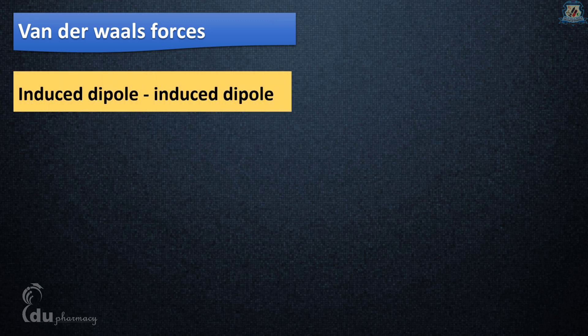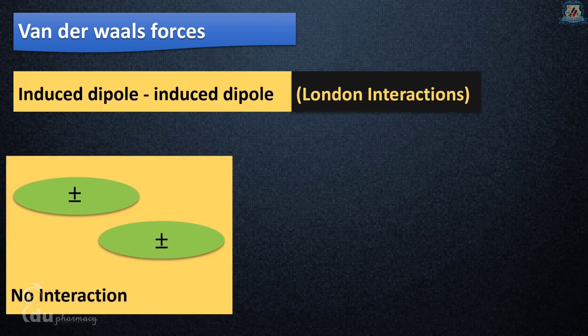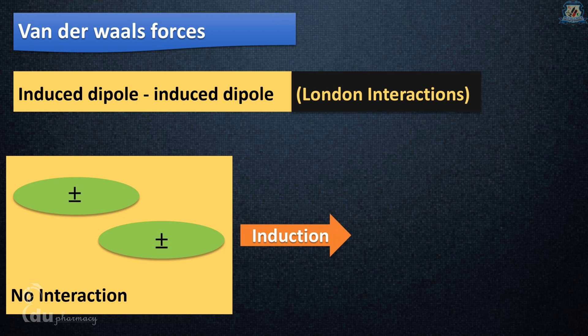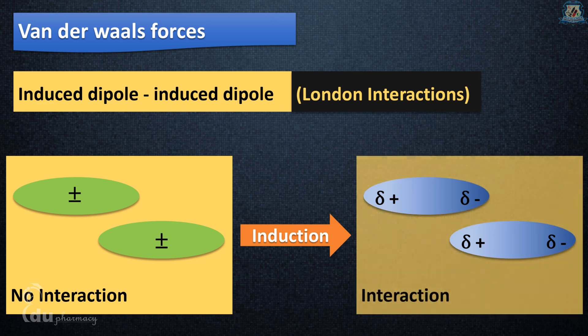Induced-dipole-induced-dipole interaction, also called London interactions, arises from temporary variation in electron density in atoms and molecules. At any instant, the electron distribution may be asymmetrical and produce an instantaneous dipole. It can cause an induced temporary dipole in the neighboring molecule, resulting in attraction. This is the weakest intermolecular force.